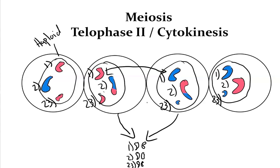Why is meiosis so different and why does it take all these extra steps? It's because we want genetic variation with reproduction. Genetic variation is very beneficial, especially in changing environments — the more genetic variation we have in our offspring, the more likely we're going to have an offspring that survives and passes on its genes.